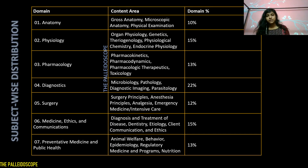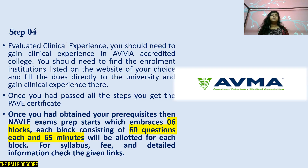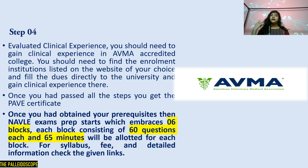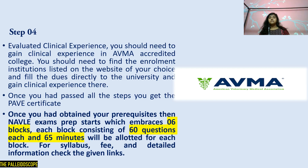In the PAVE exam blueprint, diagnostics holds the first position, while physiology, medicine, ethics, and communication hold the second position in importance. Step 4 is evaluated clinical experience — you need to gain clinical experience at an AVMA-accredited college, enroll at an institution listed on the website, and pay fees directly to the university. Once you pass all steps, you receive the PAVE certificate, after which NAVLE exam prep begins.